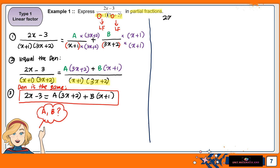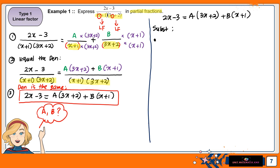Let's rewrite the equation we are going to refer to. What we are going to do is substitute values into this equation. The values you use come from the factors. The factors we have are (x plus 1) and (3x plus 2). We will substitute from x plus 1, so we use x equal to negative 1.